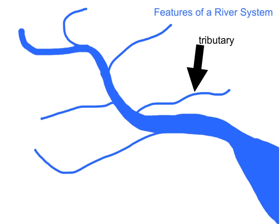A river does not stay the same size along its course. From its source to its mouth, more water is added, and some of this comes from tributaries. These are other rivers joining the river channel and form part of its river system. Here you can see a tributary shown by the arrow. There are some tributaries joining the main channel, adding more water to it.